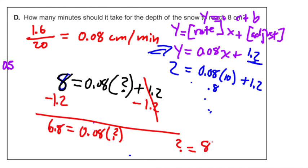Is that reasonable? Always a question we should ask. This seems like a big number. 85 minutes just to get up to eight centimeters. But yeah, this is reasonable because I'm going to need to multiply by a big number since my rate is so small. I'm going to have to multiply by almost 100. 0.08 times 100 would be 8. And the only reason I don't have to multiply by a complete 100 is because I have that little adjustment there, 1.2.